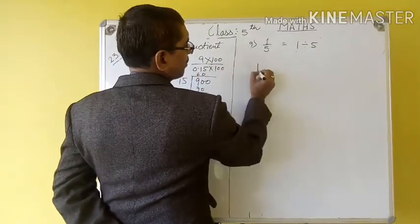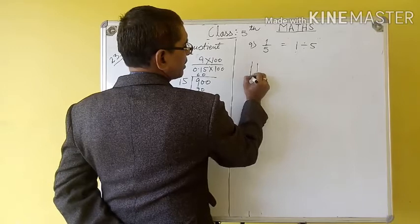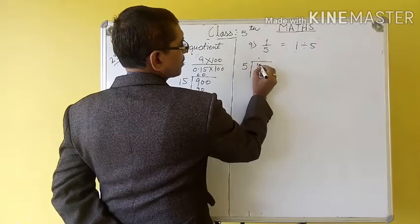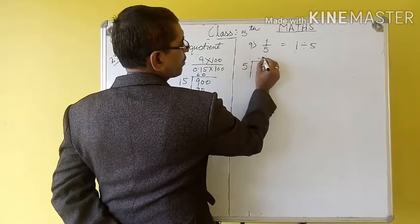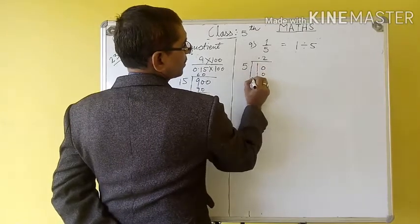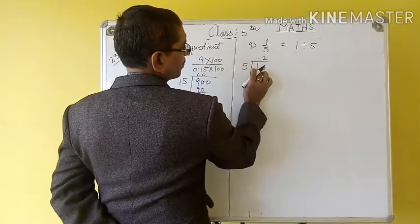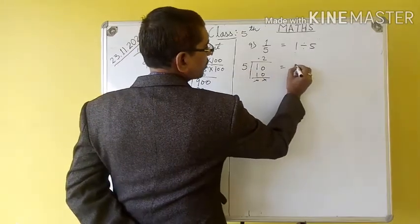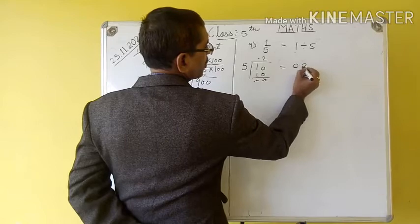Then, 1 divided by 5, decimal 0, 5 into 10. Our answer is 0.2.